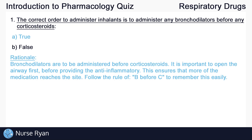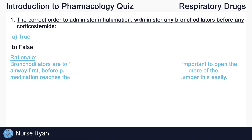Bronchodilators are to be administered before corticosteroids. It is important to dilate or open the airway first before providing the anti-inflammatory. This ensures that more of the medication reaches the site. Follow the rule of B before C to remember this easily — bronchodilators before corticosteroids.